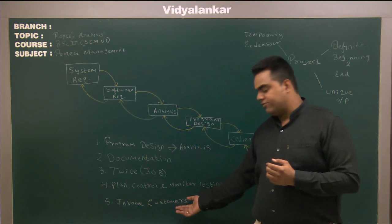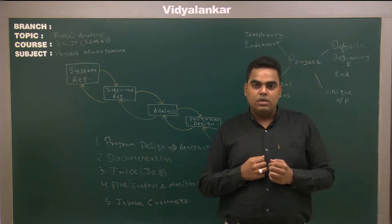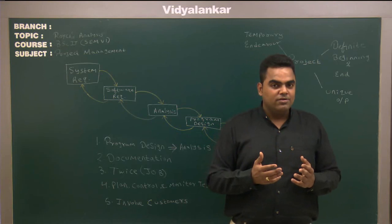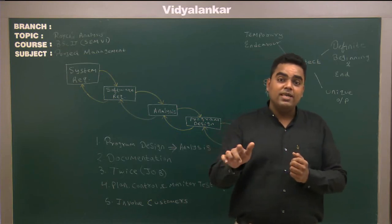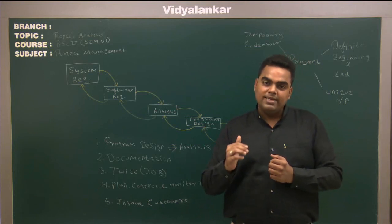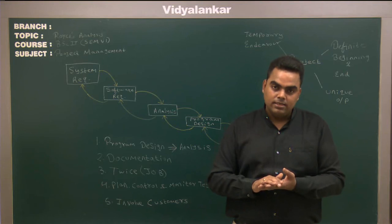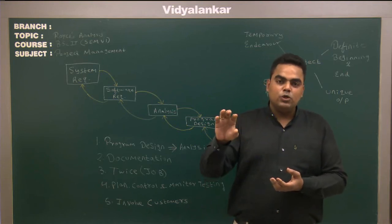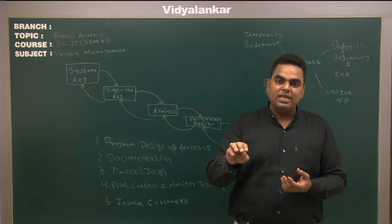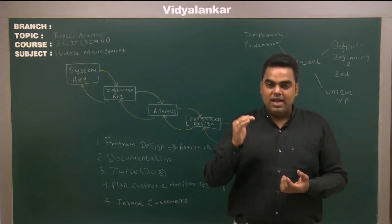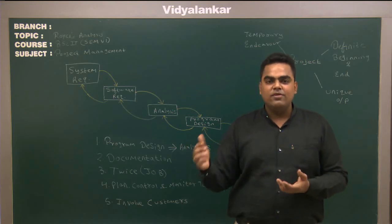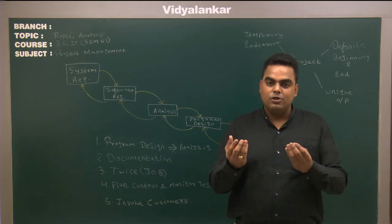The last step is to involve the customer. For example, if there are five modules in your application and you have developed one module, show it to the customer. Ask them whether it is correct, and if they want to modify something, do that modification at the beginning phase only. When customers approve all the modules at the beginning phase, after integrating them together you will generate one application. Show that application to the customer, and if satisfied with all the modules, they will give the final approval of your project. This means at early stages you have got approval of each and every module from the customer, and then you are just integrating them and supplying the product.